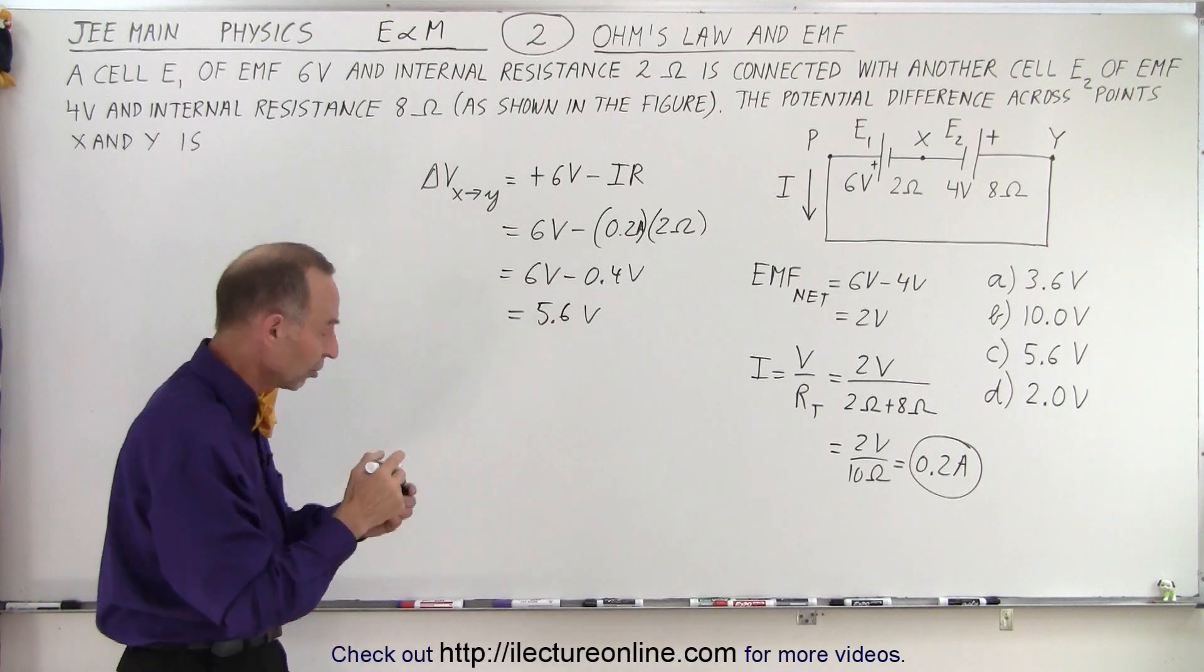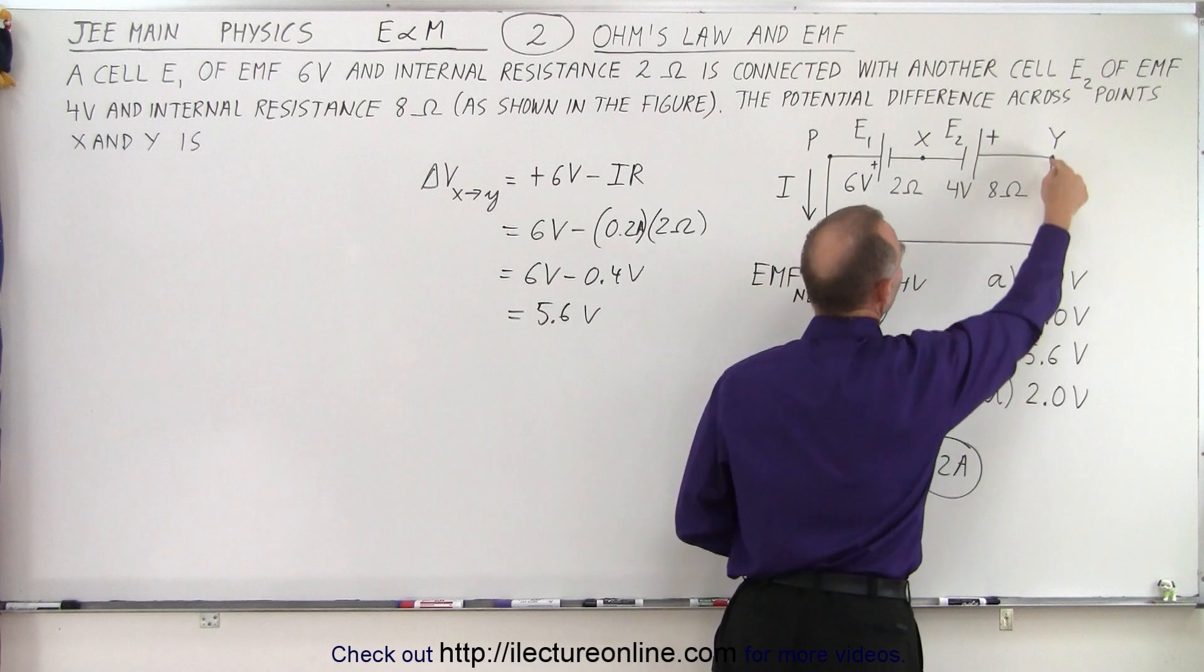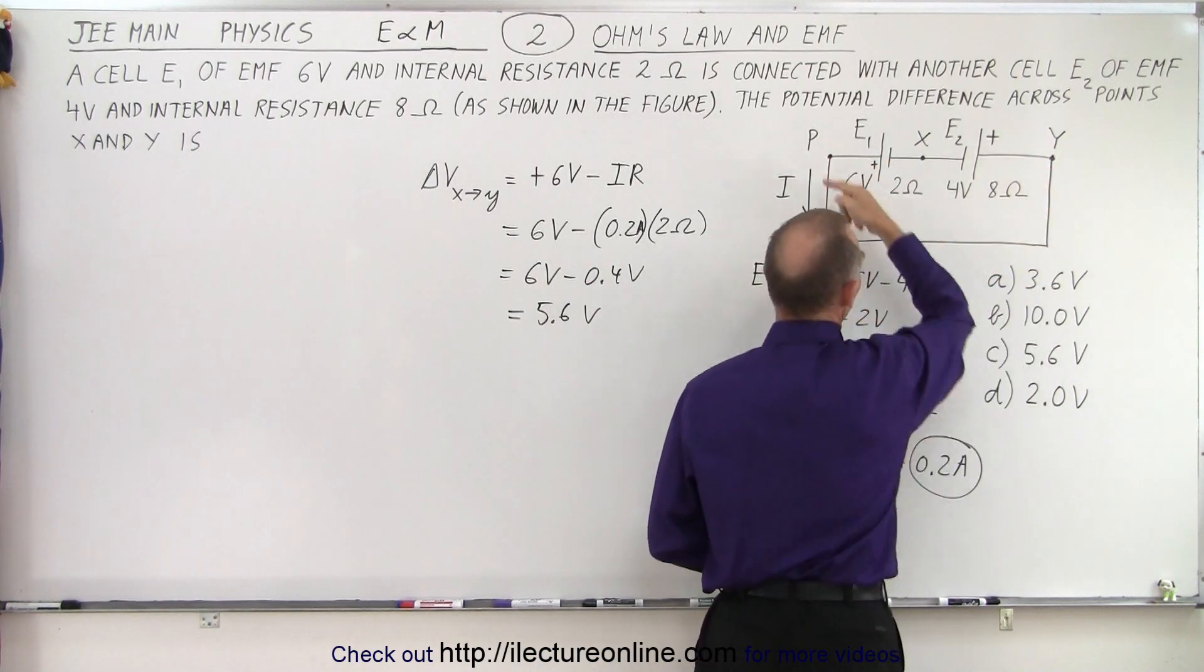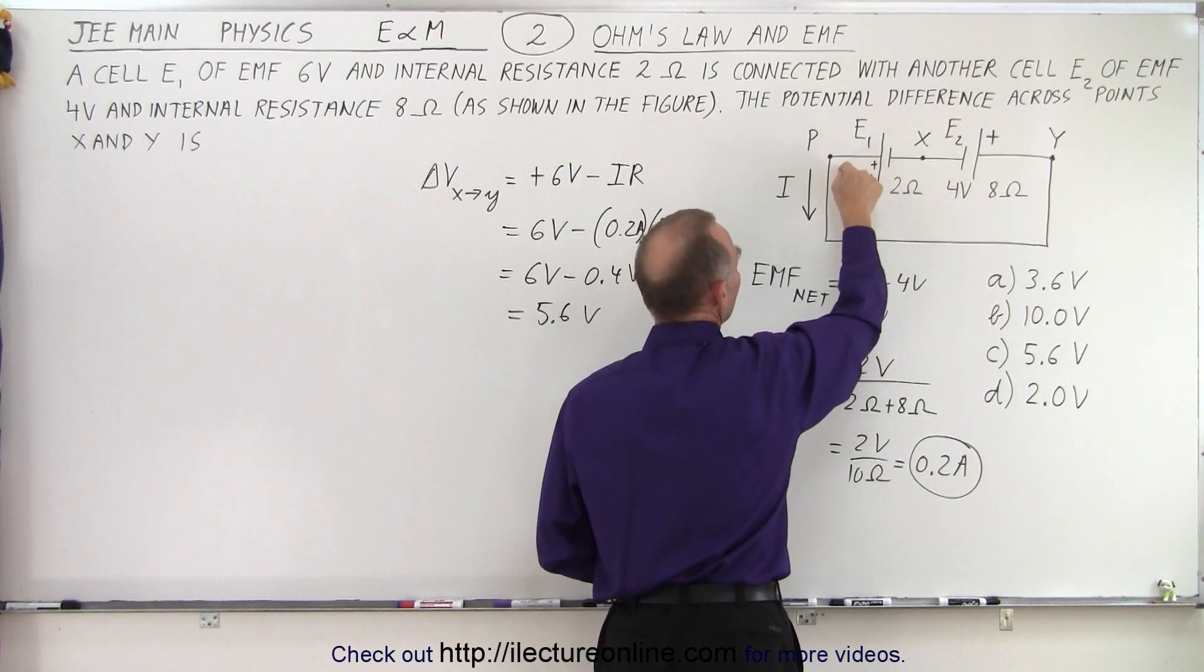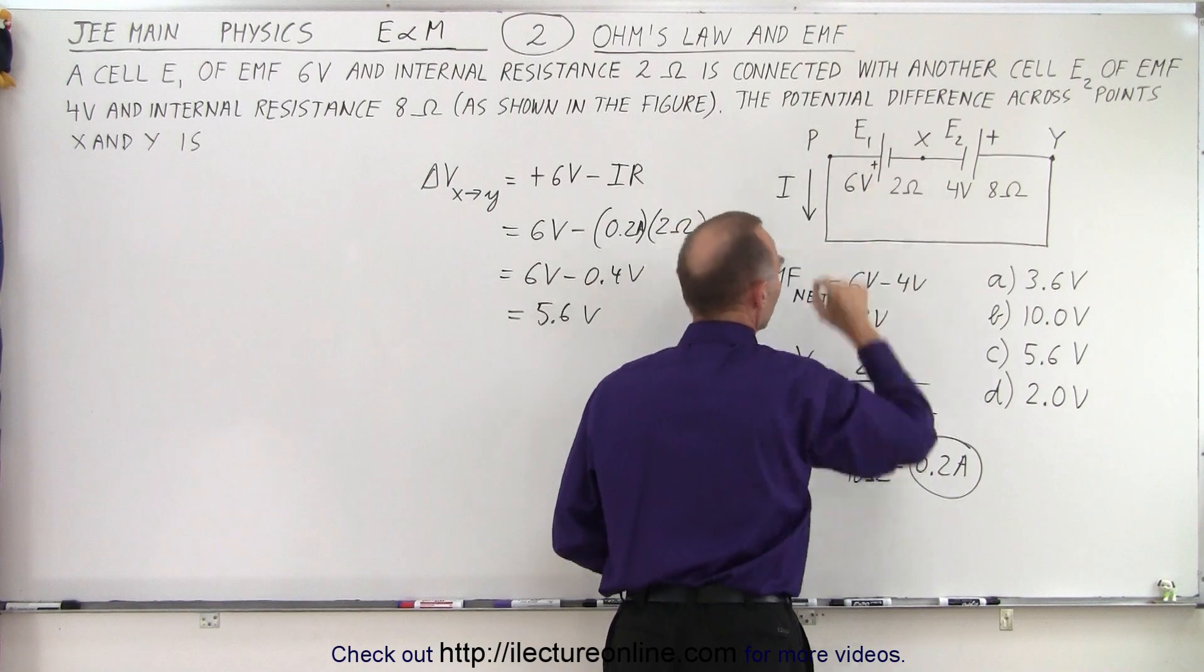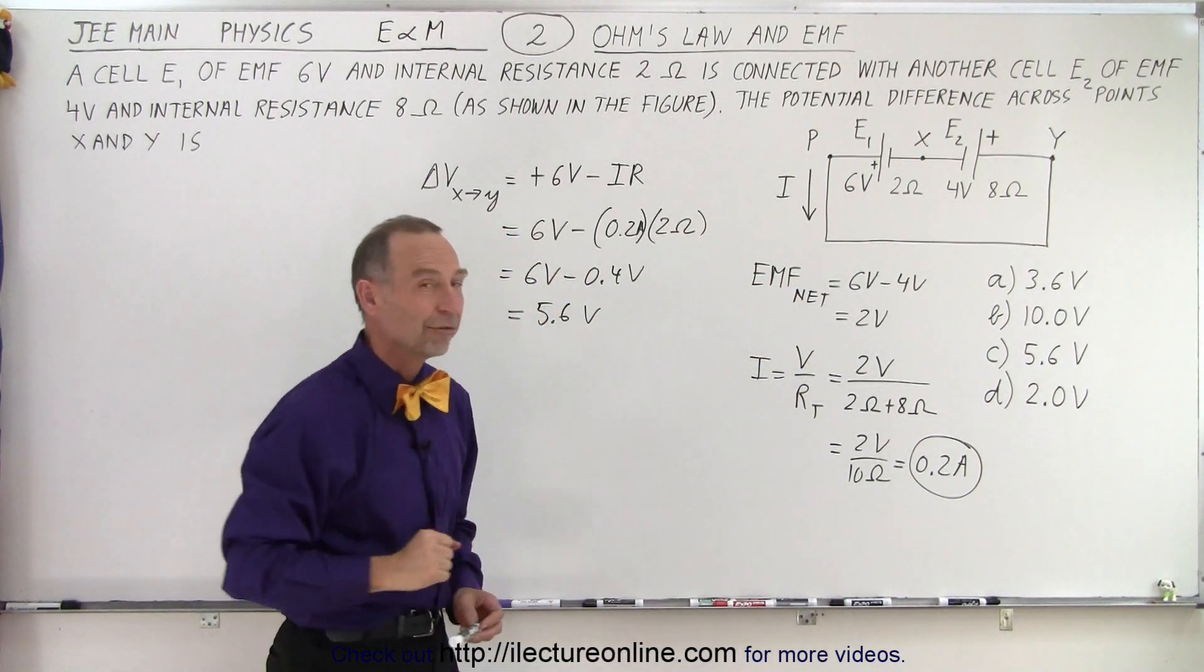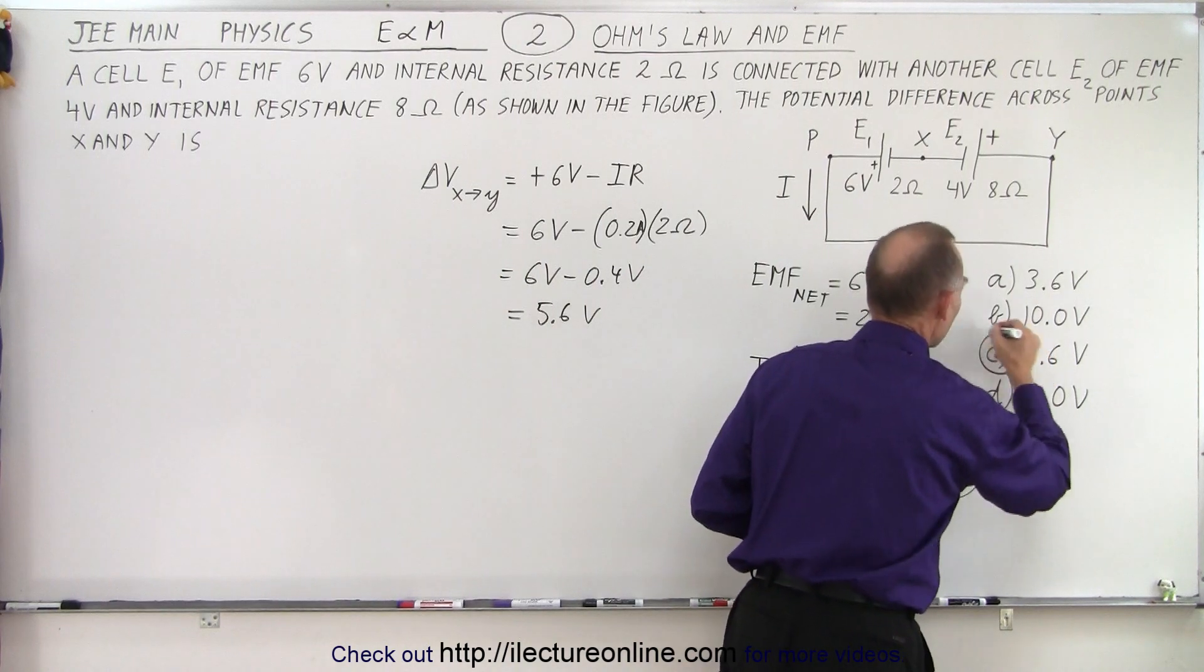And so that is the change in the voltage going from here to here, and of course there's nothing in between point X and point Y so it's essentially the same point. So going across this battery from here to here we gain 6 volts, we drop 0.4 volts because of internal resistance, and the change is 5.6 volts, and notice that is answer C.